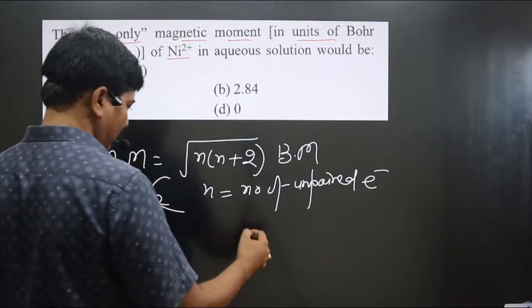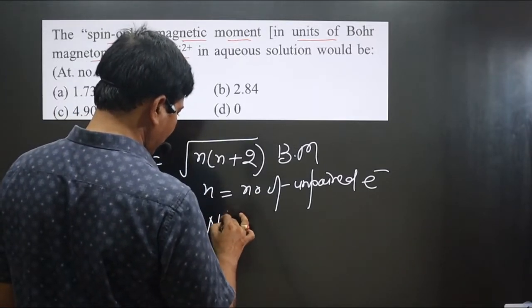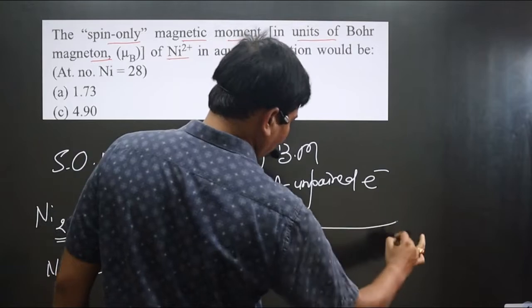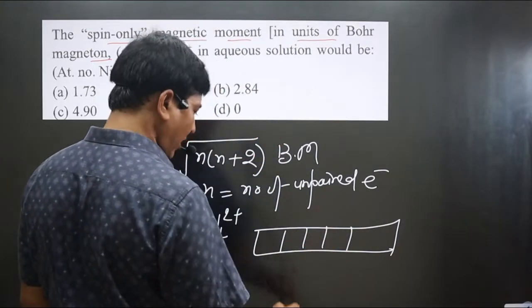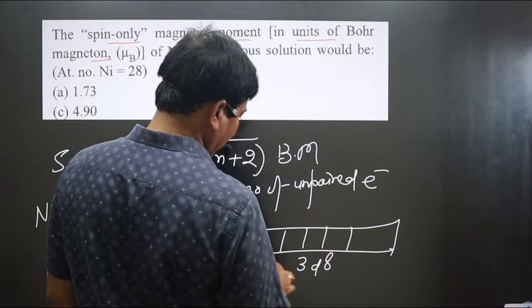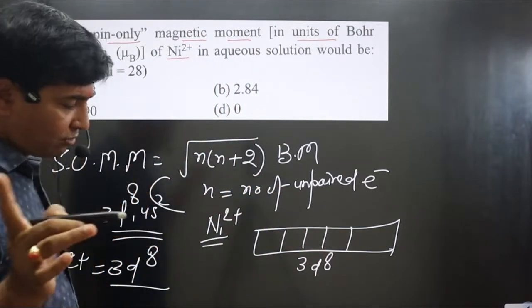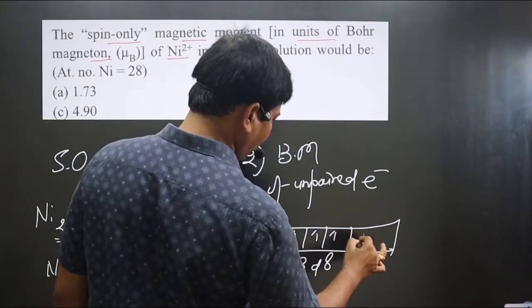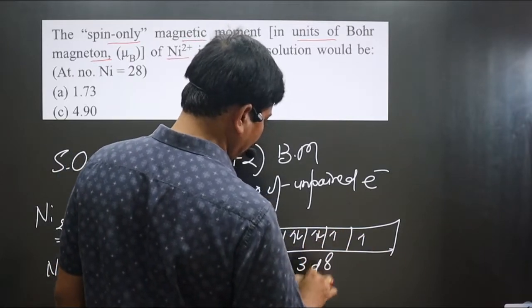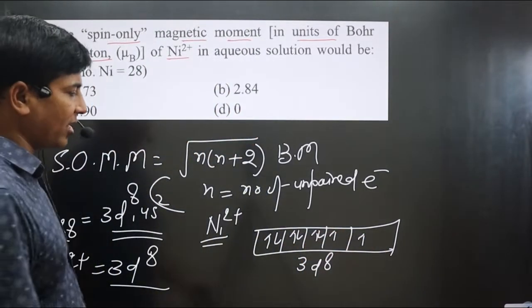We write orbital notation to determine the number of unpaired electrons. Nickel 2 plus has d orbital and in this case, how many boxes are there? Five boxes, 3d is there. Electrons should be singly filled, follow the Hund's rule: one electron, second, third, fourth, fifth, and sixth the same one, and it is 8. How many unpaired electrons are there?